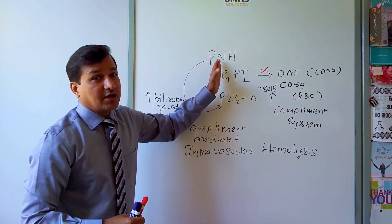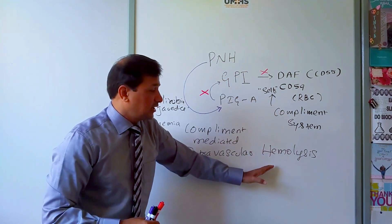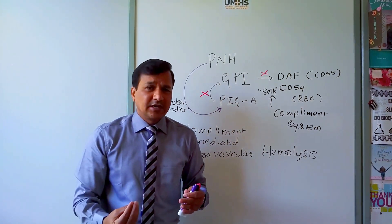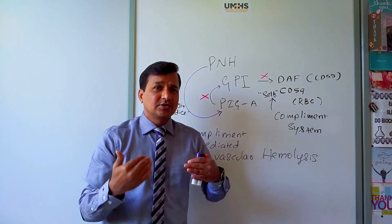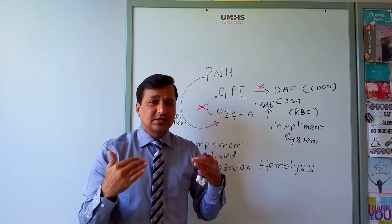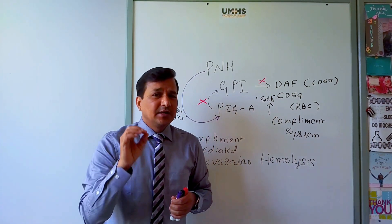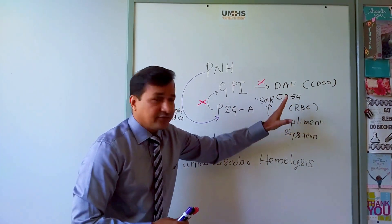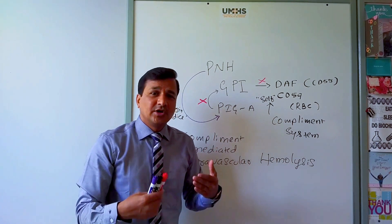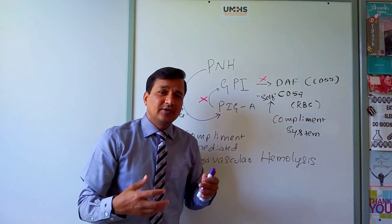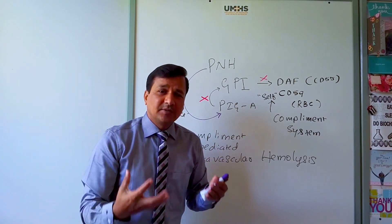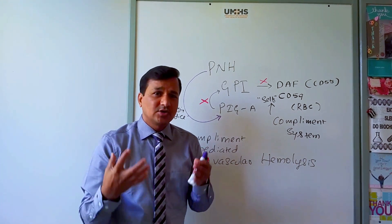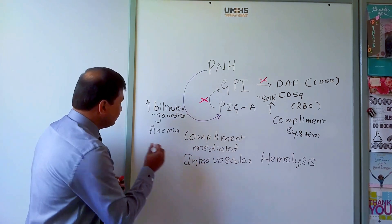As the name indicates, PNH involves nocturnal hemoglobinuria. During sleep, the lowered respiratory rate causes carbon dioxide retention and a drop in physiological blood pH. This activates the complement system, which lyses red blood cells lacking DAF and CD59 at a higher rate overnight, so morning urine appears red.